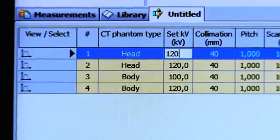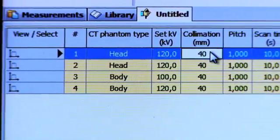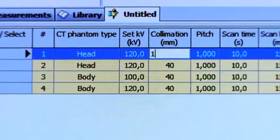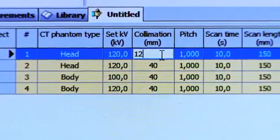Kilovolt. Collimation. This is the thickness of the total detector area used in the CT. Sometimes you have to calculate the thickness yourself.